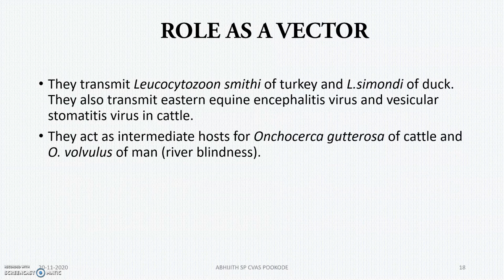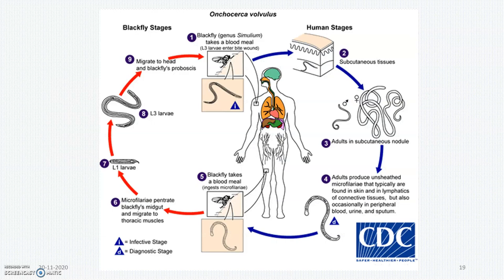As a vector, they act as intermediate hosts for river blindness in human beings and onchocerciasis in cattle. They transmit eastern equine encephalitis virus and vesicular stomatitis virus in cattle. They also transmit leucocytozoonosis of turkey and duck. So they are transmitters of leucocytozoonosis and act as intermediate hosts in human and cattle onchocerciasis.